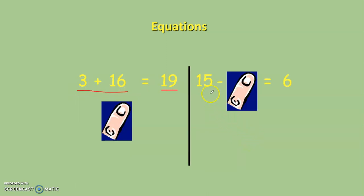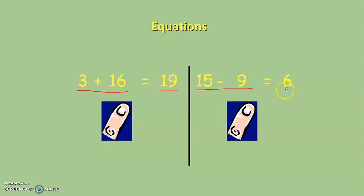On to our third example, 15 subtract what gives me 6. So what's underneath here? What am I covering up? What do I take away from 15 to give me an answer of 6? Hopefully you should have thought of your answer by now. 15 take away 9 will leave me with 6. Again, we're balancing it out. 15 take away 9 is 6 and this side is also 6.